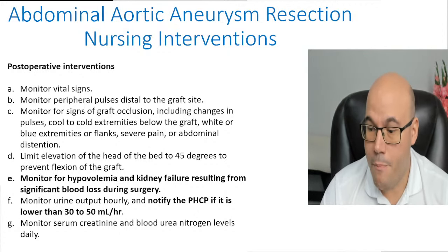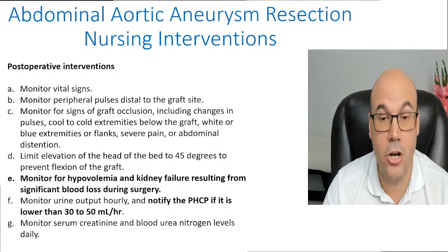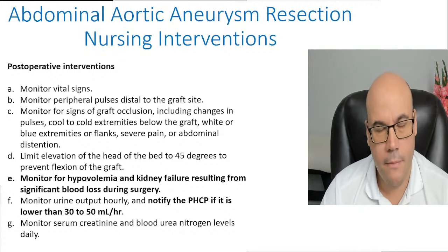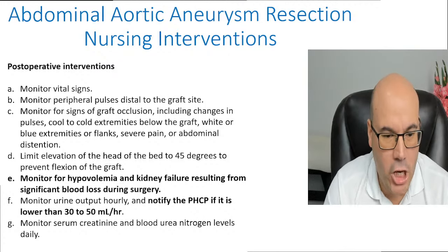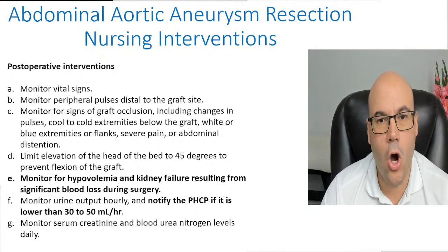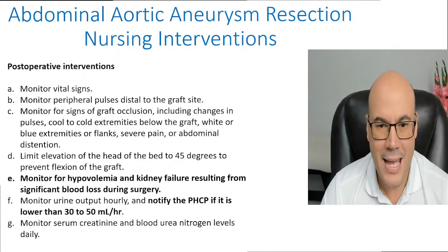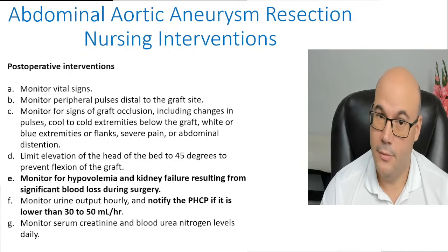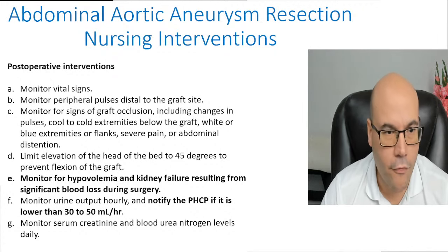We have to monitor for hypovolemia — and this is highlighted because of ABC: airway, breathing, circulation, which is extremely important on the NCLEX. Monitor for signs of hypovolemia and kidney failure resulting from significant blood loss during surgery. We want to avoid acute kidney injury due to low renal perfusion. Therefore we must check urinary output, serum creatinine, and BUN — these are excellent indicators of accurate blood flow perfusion.